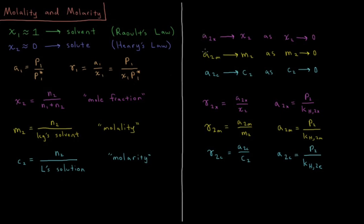Each of these are going to have different activities defined for them. We have a₂χ, which approaches the mole fraction as the mole fraction goes to zero — so in a Henry's Law standard state for our solute, we want the activity to approach the mole fraction as it goes to zero. Or we could define the activity in terms of molality, where the activity approaches the molality as we get a more dilute and sparingly dissolved solute as m₂ goes to zero. Also, we could have the activity for the molarity: a₂c approaches the molarity as the molarity approaches zero.